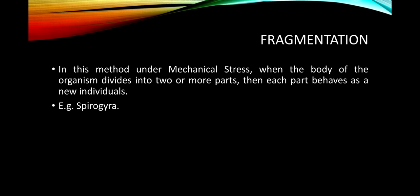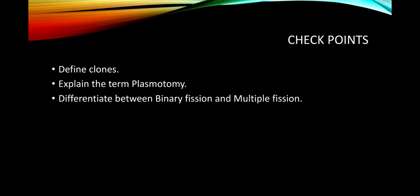The next mode is fragmentation. In this method, under mechanical stress, when the body of the organism divides into two or more parts, each part behaves as a new individual. For example, Spirogyra is a filamentous alga — when the body of this alga is divided into two or more parts by any mechanical means, each part behaves as a new individual.